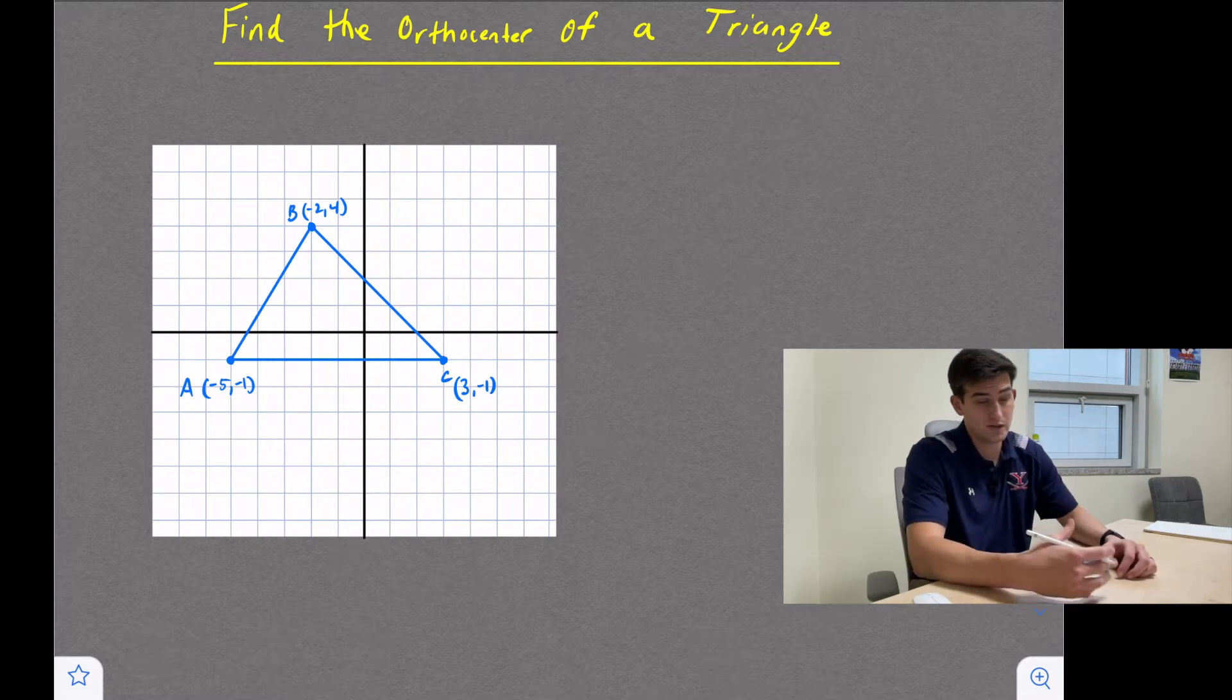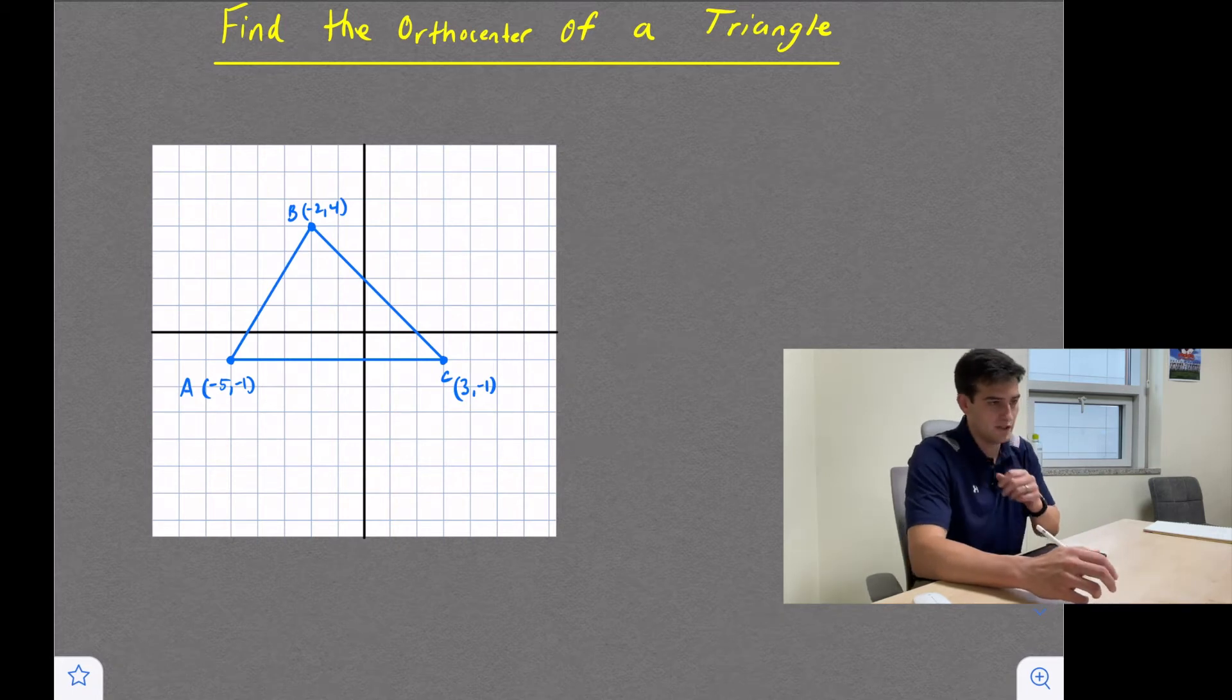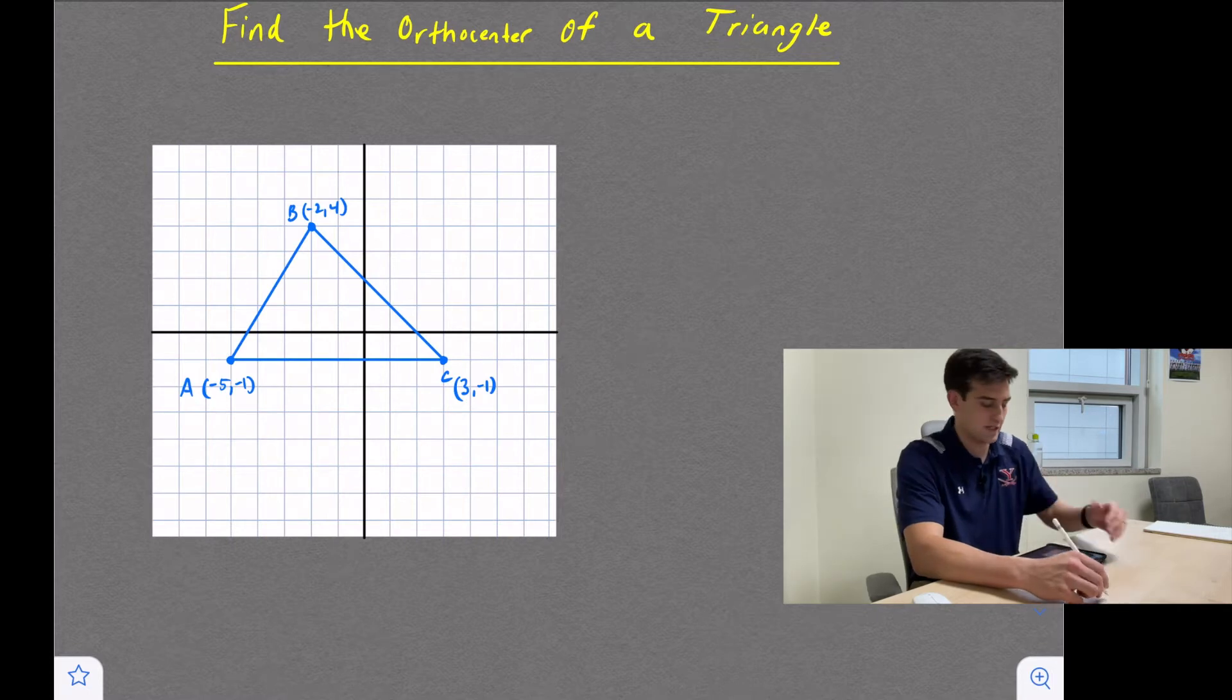So the orthocenter is formed at the intersection of the three altitudes of the triangle. So the altitude of a triangle is a perpendicular segment from the vertice to the opposite side. That's what the altitude is.